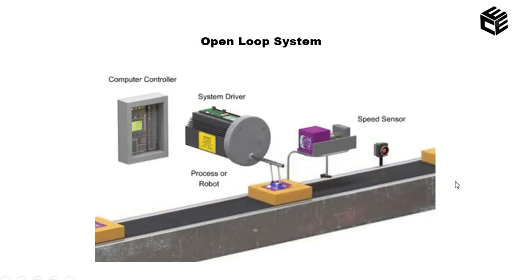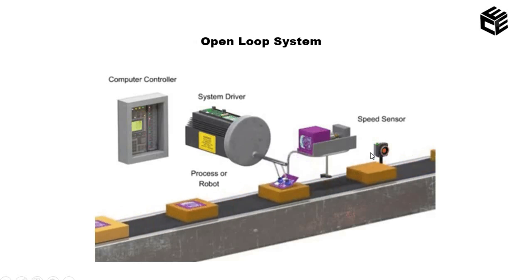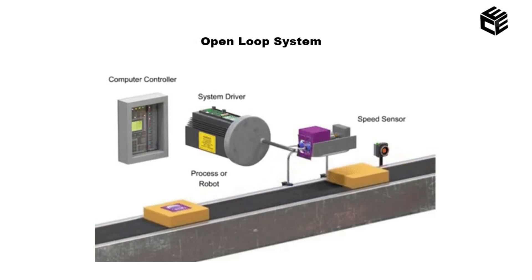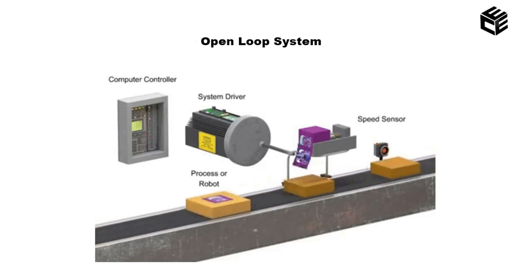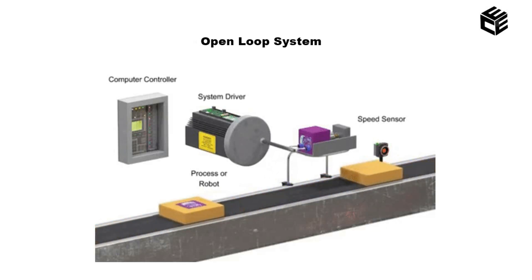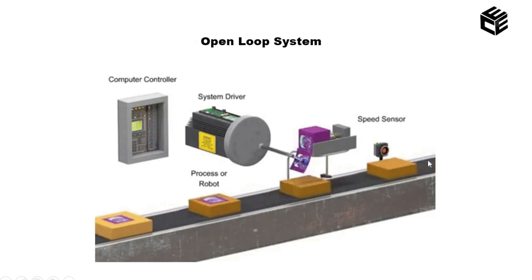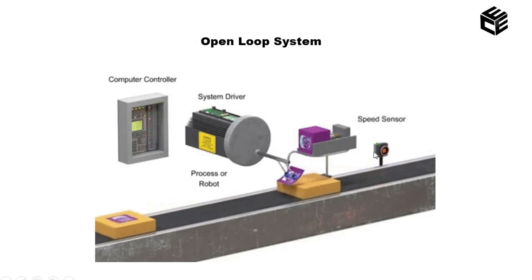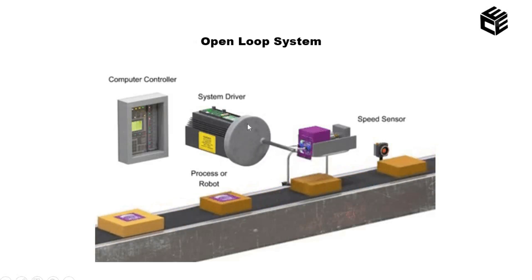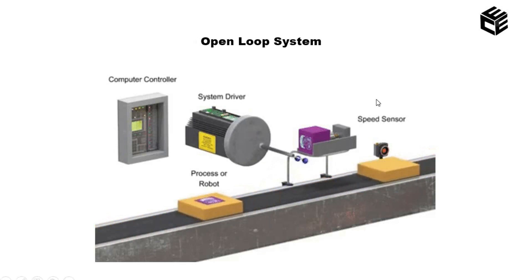One more example for open loop system: a number of boxes are moving over a belt. A speed sensor is used to detect the speed of the movement of each box. Initially the speed of the boxes is very low, but later the speed gets increased. Based upon the movement of the boxes, the speed sensor senses the speed and the output of the speed sensor is given to the system driver. The system driver's speed is controlled by the speed sensor's output.